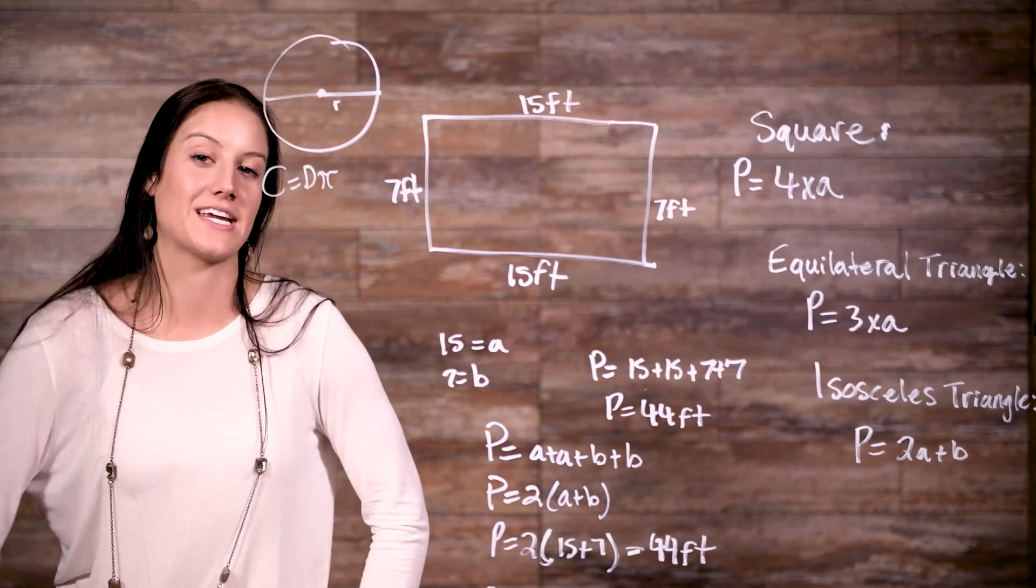Alright, now onto area. When we are looking at the perimeter of different shapes, we are able to simplify the formulas, giving us different formulas for different shapes, yet keeping in line with the definition of adding up all the sides.